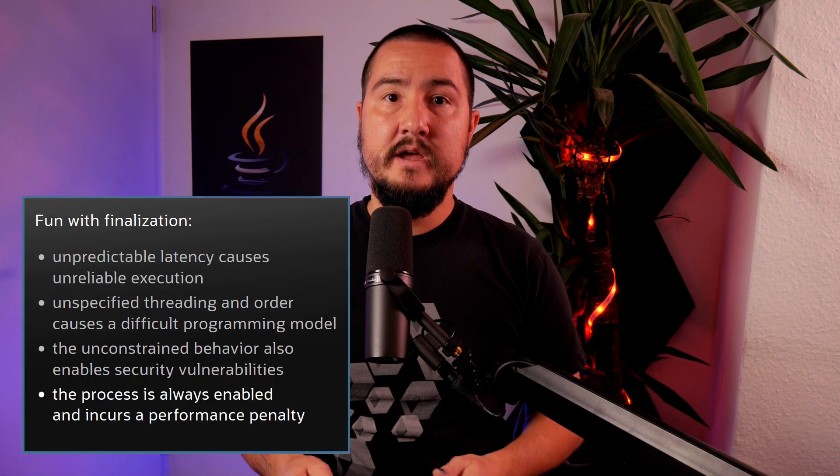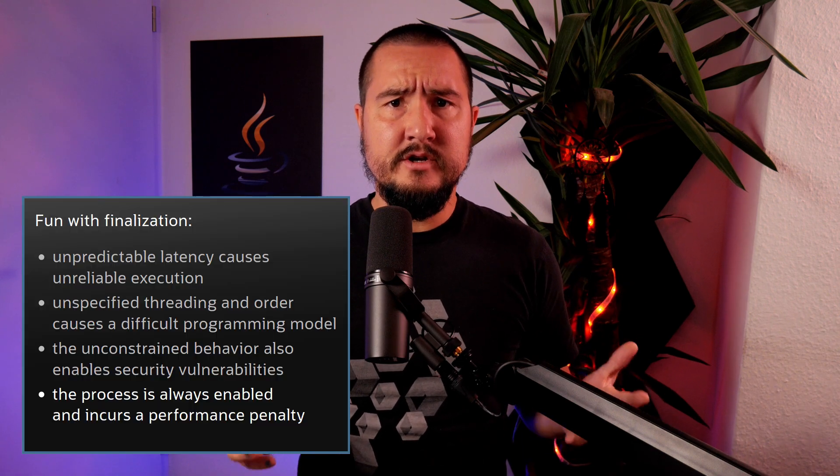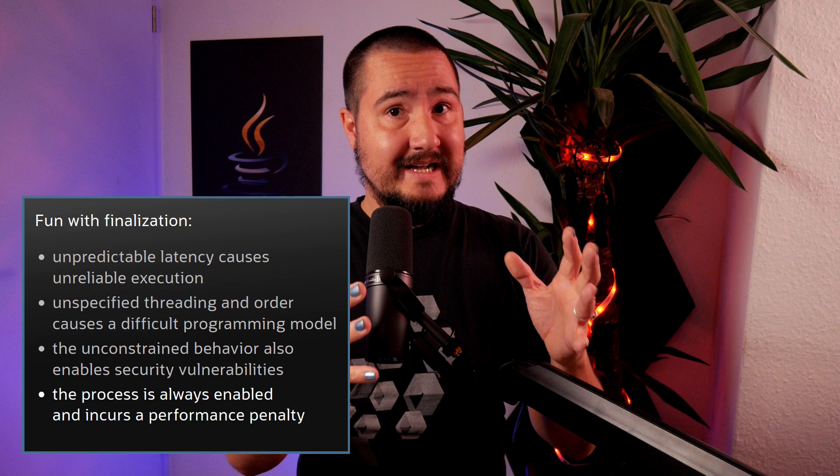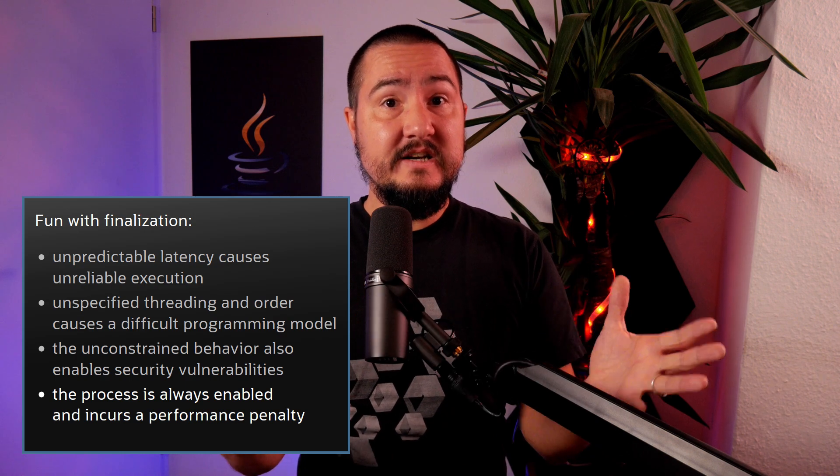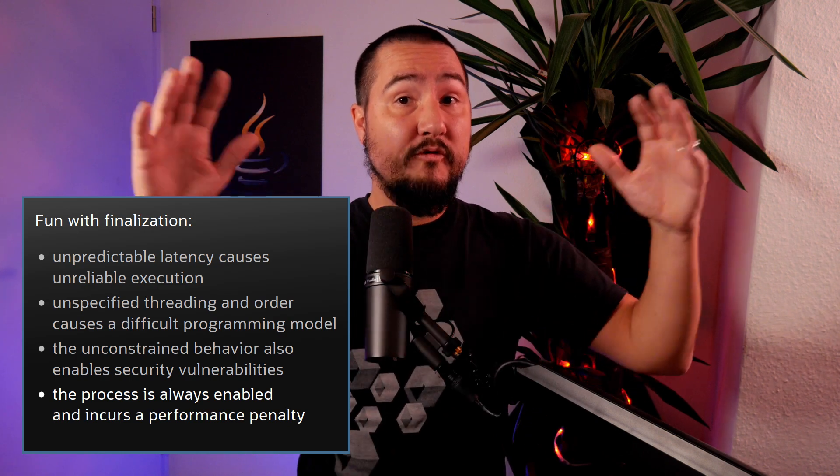Last but not least, finalization is a performance drag. Not huge, but measurable. Garbage collectors obviously need to handle them, which can lead to increased pause times and data structure overhead. For example, the ZGC team estimates 1.5% memory footprint just for finalization. This is particularly annoying if only a few of a class's instances need finalization, because it's always on for all of them. There is no way to register or deregister an instance for finalization — if it has the method, it gets treated accordingly.